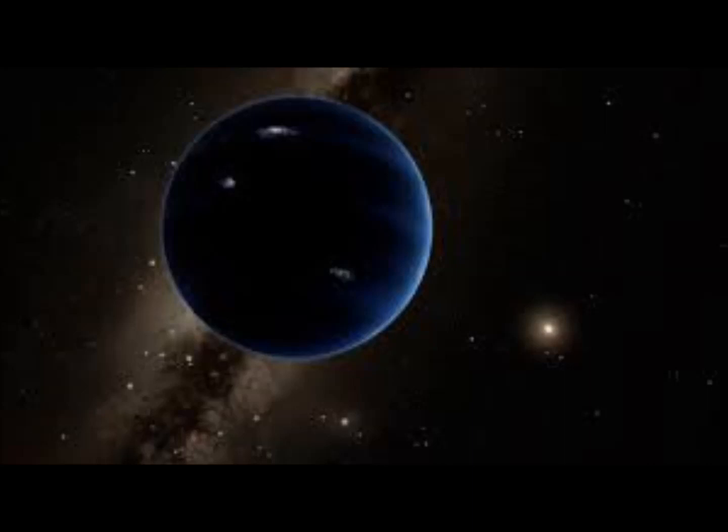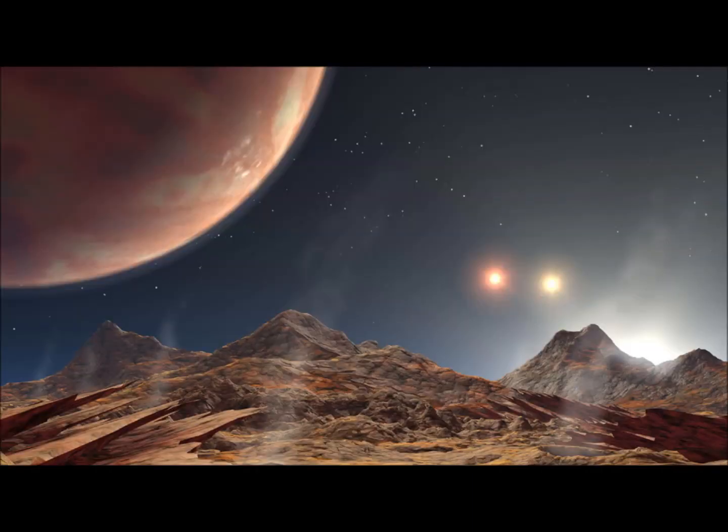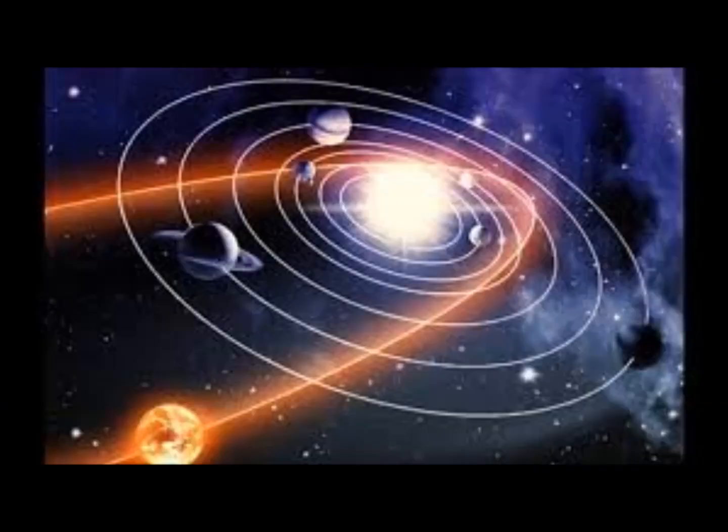Researchers believe that the exoplanet may have formed close to its host stars. However, drag over time caused the exoplanet's orbit to decay, which caused it to migrate inwards towards the stars. The gravitational forces from the whirling twin stars then kicked it out into an eccentric orbit that almost threw it out of the system and into the void of interstellar space. Then a star passed very close by to the system, stabilizing the exoplanet's orbit and preventing it from leaving its home. This is what the Hubble Space Telescope news release explains.